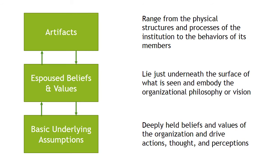The culture of an organization — for our purposes, higher education — can be examined on multiple levels, according to Edgar Schein. On the surface level are artifacts, which include everything you experience when observing a group. Artifacts can range from the physical buildings and structures of the institution to the behaviors of its members. Just underneath the surface of what is seen are the espoused beliefs and values, which embody the organizational philosophy or vision. These include goals, values, and aspirations of what the institution is to become. Finally, through many years of shared learning evolves the basic underlying assumptions of the institution — deeply held beliefs and values that determine the nature of the organization and drive the actions, thought, and perceptions of its members.